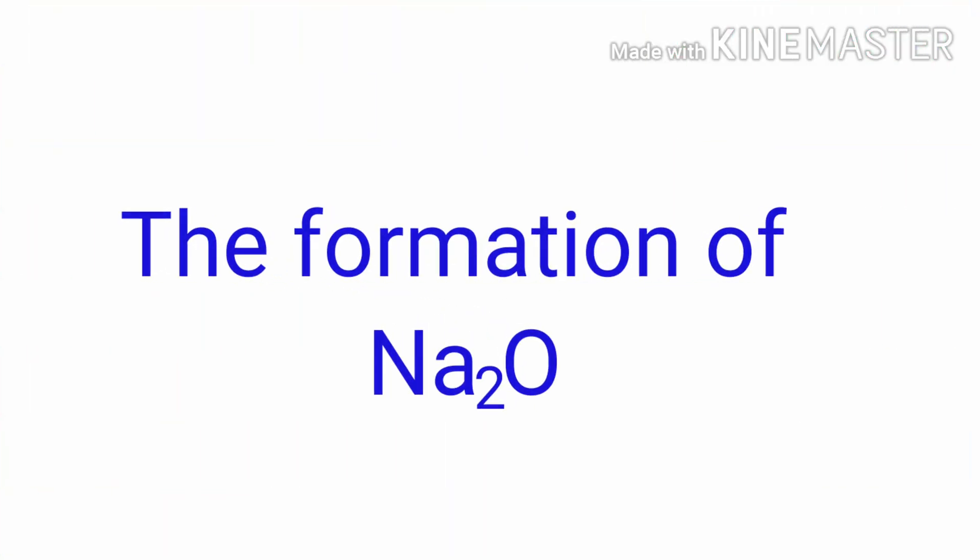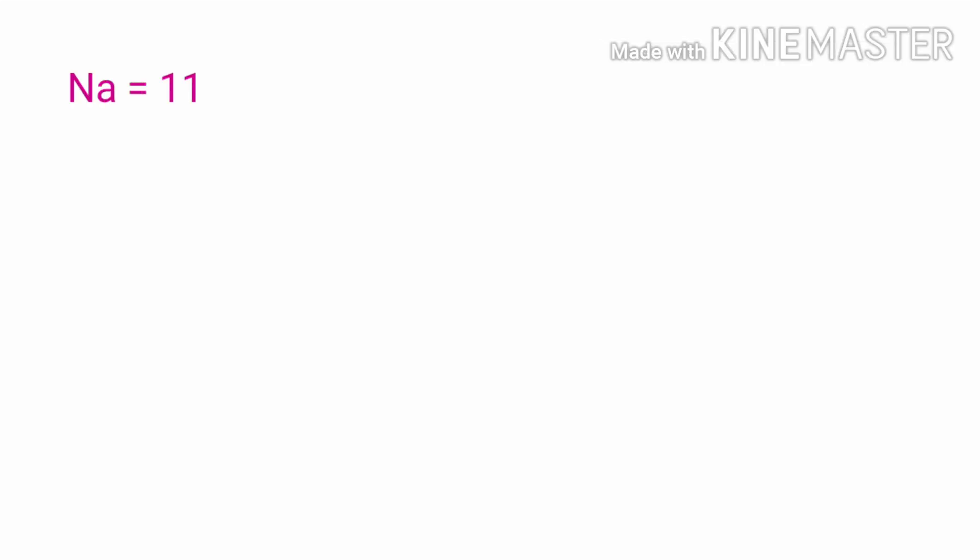The Formation of Sodium Oxide. In the sodium atom, there is only one electron in its outer electron shell. It takes less energy for sodium to donate that one electron than it does to accept seven more electrons to fill the outer shell.